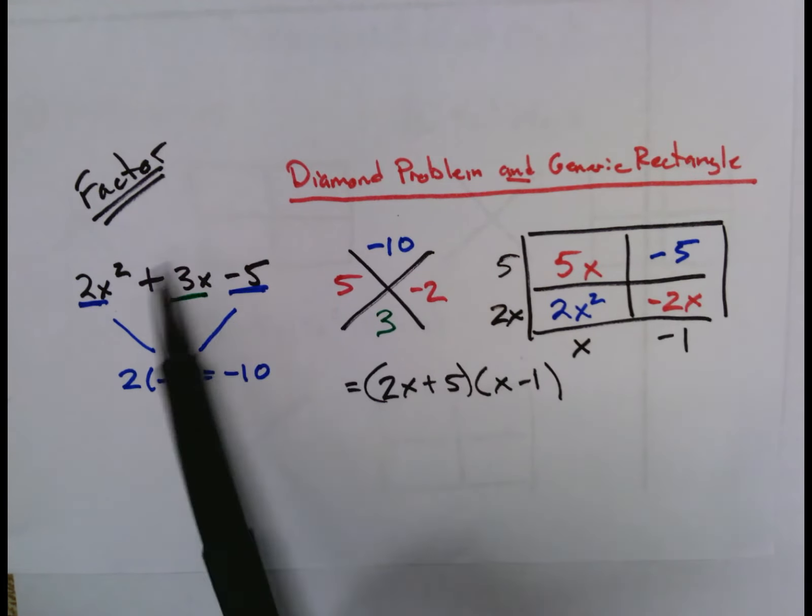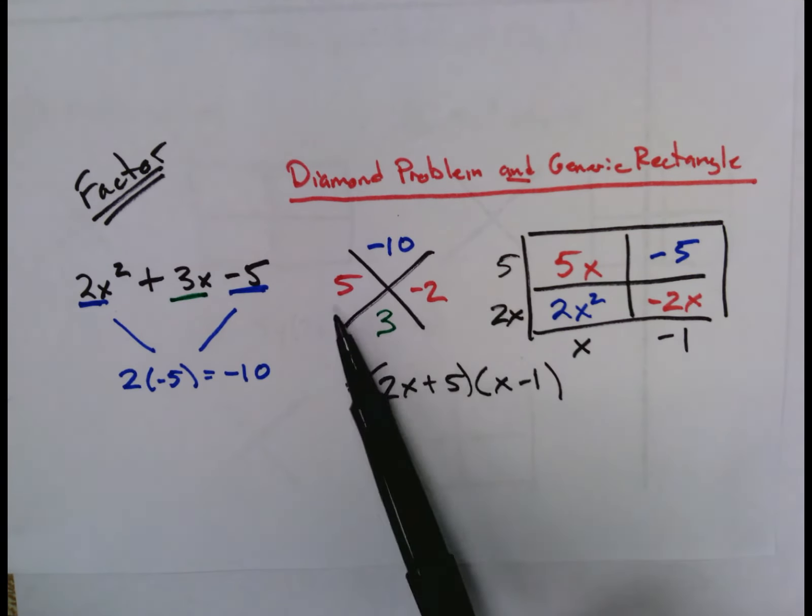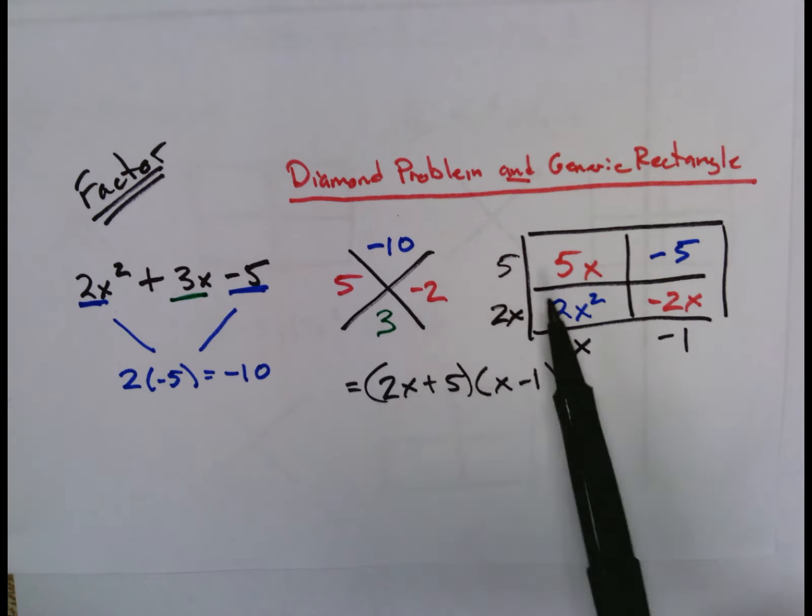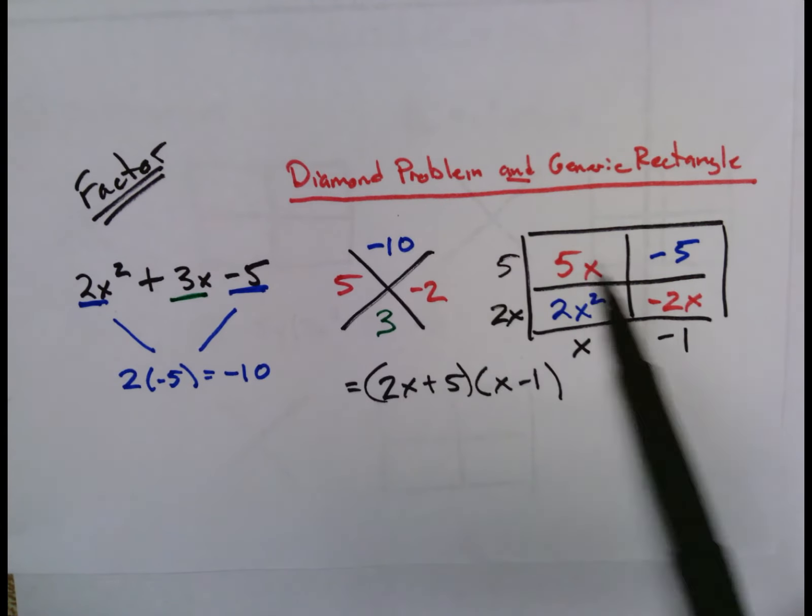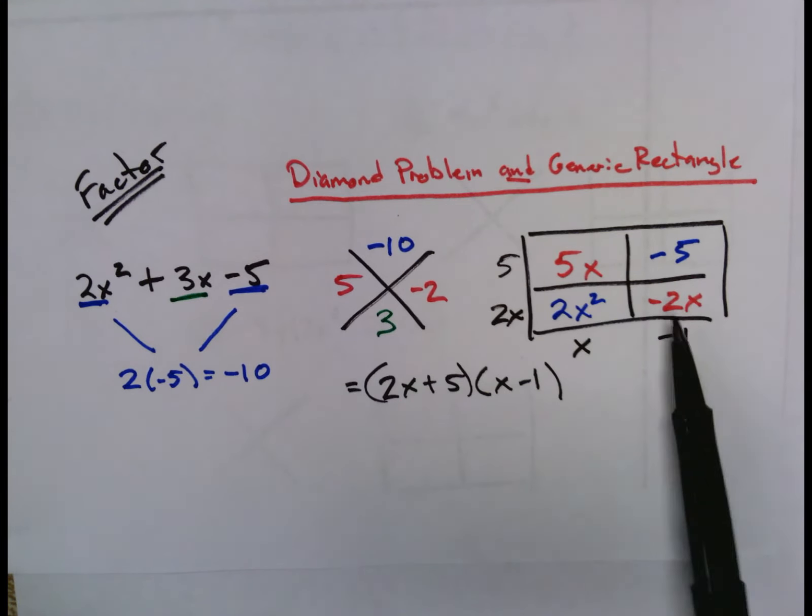The middle term, the B, the 3 here, goes in the bottom of your diamond problem. And you complete your diamond problem by figuring out the two numbers that multiply to -10 and add to 3, which would be 5 and -2 in this scenario. Those are the values or quantities that go in the other diagonal of your generic rectangle. So 5x and -2x go in here.